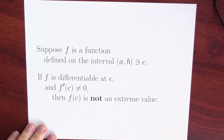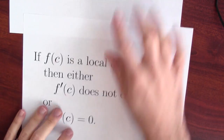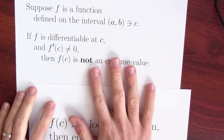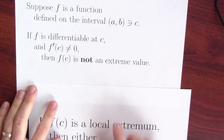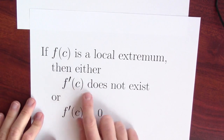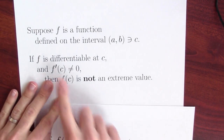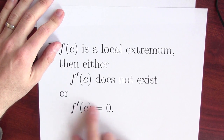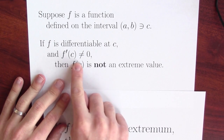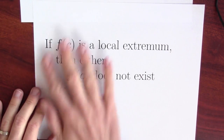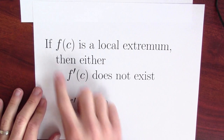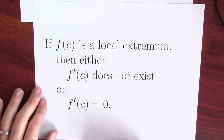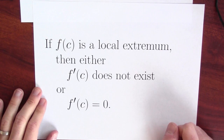Now, we can play this in reverse. That means that if f of c is a local extremum — if f of c is an extreme value — then either the derivative doesn't exist, to prevent the first case from happening where f is differentiable at c, or the derivative is equal to 0, which prevents the second thing, f prime of c being non-zero. So this is another way to summarize what we've done: if f of c is a local extremum, then one of these two possibilities must occur. Both of these possibilities do occur.